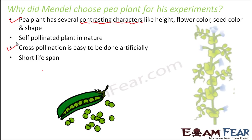A short lifespan means the plant lives for a shorter period, then produces many seeds that give rise to the next generation. This is why Mendel could complete his seven years of experiments in that timeframe — had he chosen a plant with a longer lifespan, it might have taken 20 to 30 years to reach the same conclusions. The faster one generation completes and the next begins, the better it is for experimentation. Additionally, pea plants are easy to cultivate — one generation can be fully cultivated in a single growing season — so he wasn't wasting time just waiting for the plant to grow.